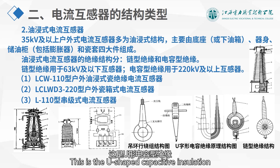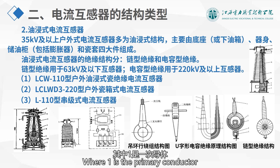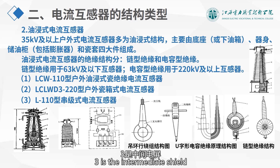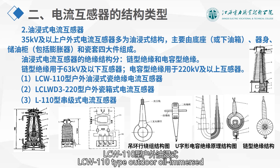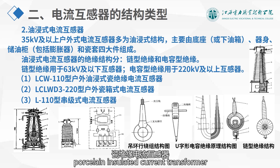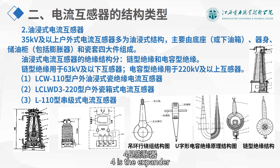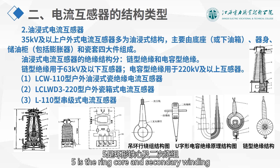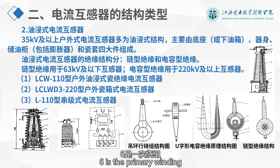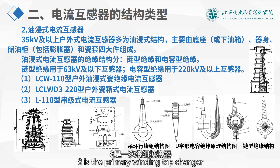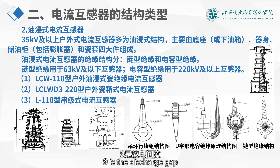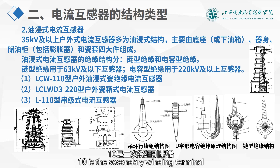This is the U-shape capacitive insulation principle structure diagram, where 1 is the primary conductor, 2 is the high voltage shield, 3 is the intermediate shield, 4 is the ground shield, 5 is the secondary winding, 6 is the primary winding, 7 is the porcelain bushing, 8 is the primary winding tap changer, 9 is the discharge gap, and 10 is the secondary winding terminal.